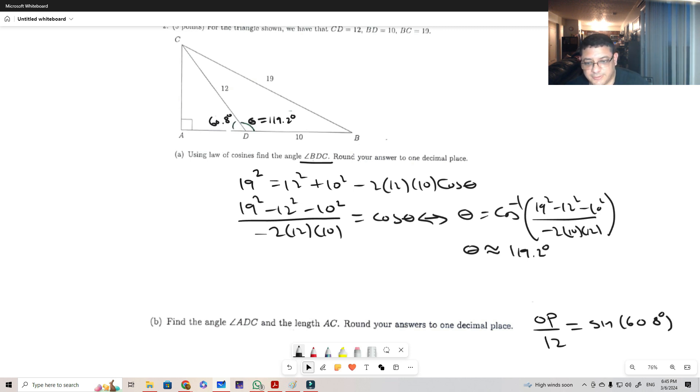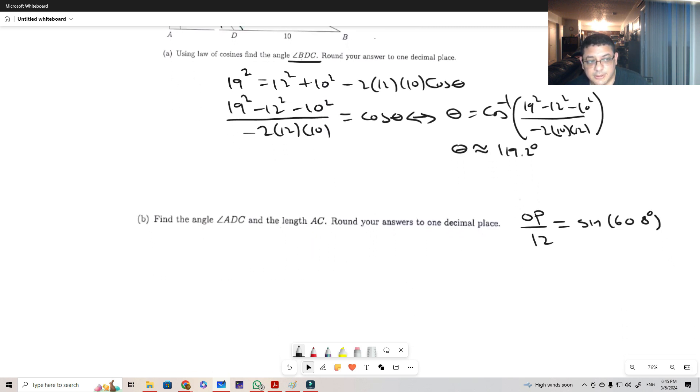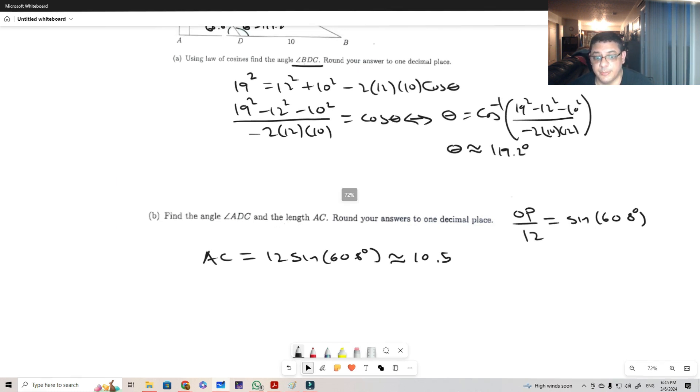So that means that the opposite here, or the AC side, is just 12 times sine of 60.8, which if we compute this in our calculators, this is going to be 10.5. Okay, so that is the solution to quiz number six.